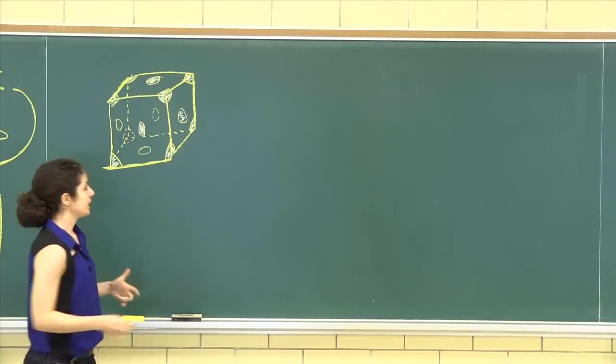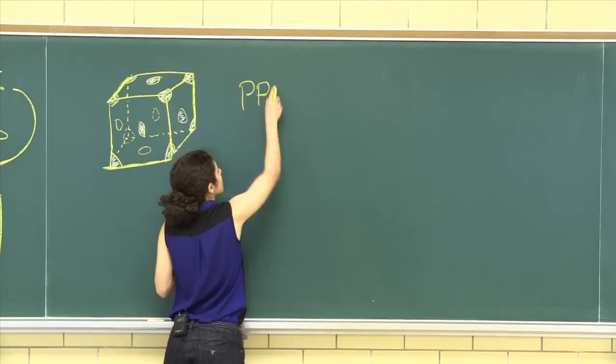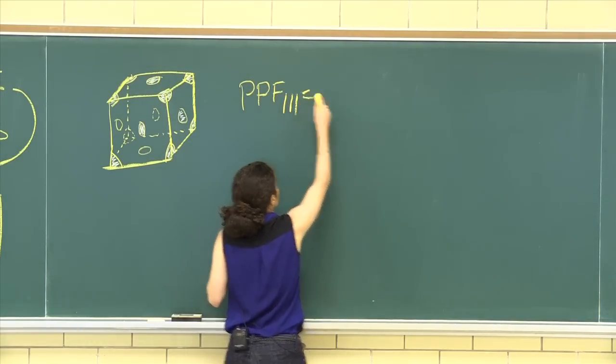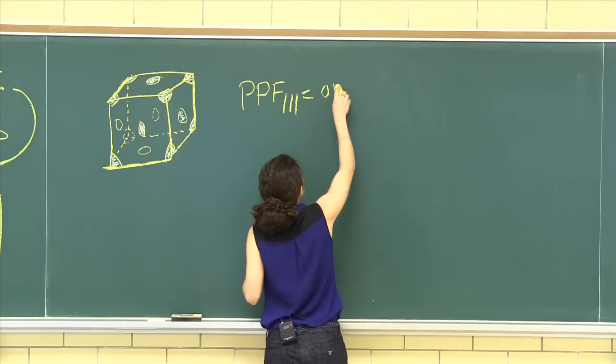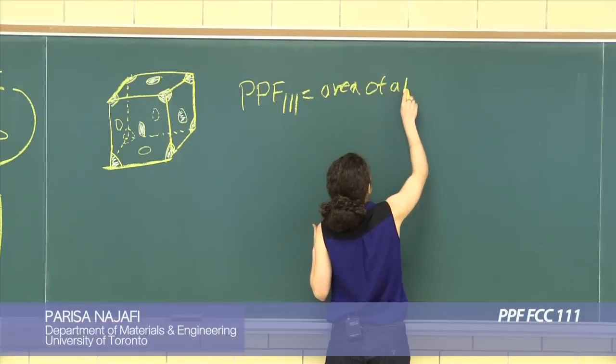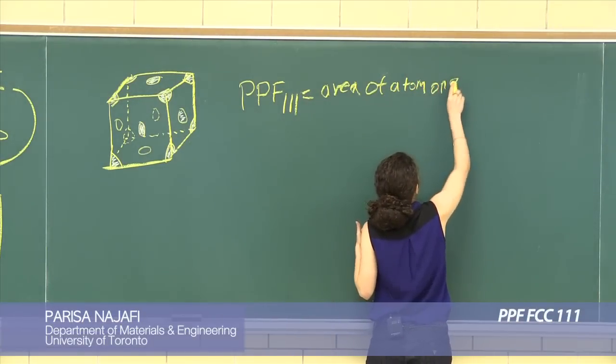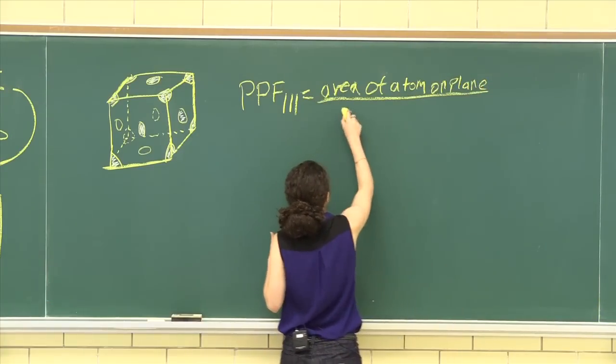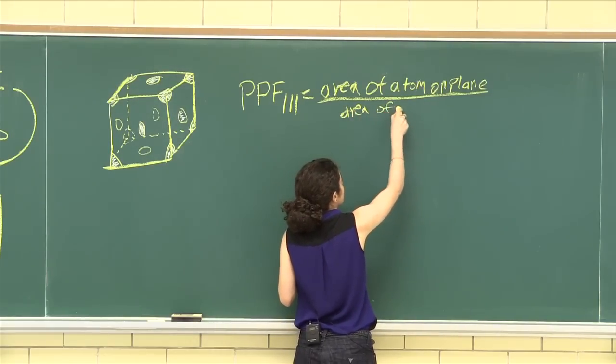The planar packing factor for the 1-1-1 plane is, always write out the formula, area of atoms on the plane over the area of the plane.